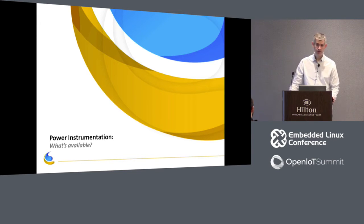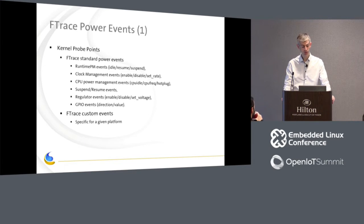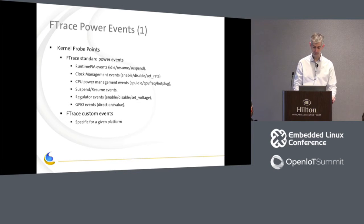Among all these elements, what's available today? The good news is that the kernel through the FTrace framework is already providing all the probe points we highlighted: runtime PM events, clock management events, CPU power management events, platform suspend/resume events, regulator events, GPIO events — everything. We have all the data we need, and if something's missing it's quite easy to add. For custom platform needs, we can also easily add our own events.